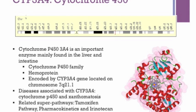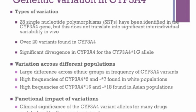An important paralog is CYP4F22. The gene CYP3A4 has 28 single nucleotide polymorphisms, or SNPs, identified in the gene, but this does not necessarily translate to significant individual variability in vivo. There have been over 20 variants found, with significant divergence specifically in the CYP3A4*1G allele. In terms of variation across populations, there is a large difference across ethnic groups in the frequency of CYP3A4 variants.